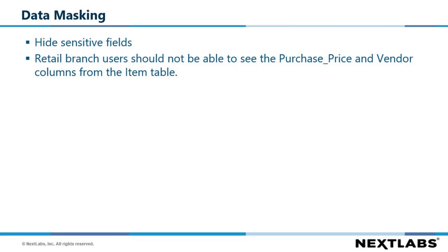An important feature of DAE for BigQuery is data masking, which allows sensitive fields to be hidden from unauthorized users. This is powered through attribute-based access control that allows data access to be determined based on policies that examine attributes of the data being accessed, context of the request, and user identity. Those who do not meet the set requirements will find the fields to be masked.